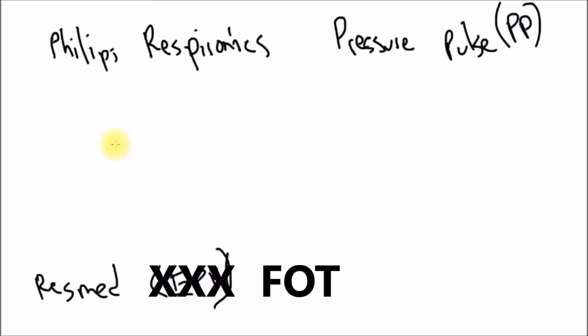If they stop breathing and the belts also stop moving, we know that they're not even trying to breathe, which is why they stop breathing. This would be a central apnea. The machines call these clear airway apneas.